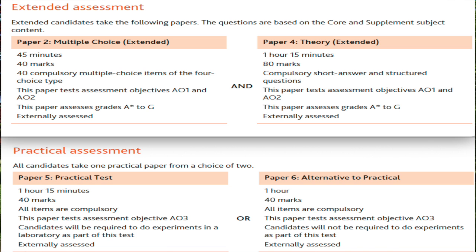Going back to paper two in IGCSE: it's multiple choice and related to Extended. The time allowed is 45 minutes and the total mark is 40 marks. For paper four, which has theory questions, the time is one hour and 15 minutes — around 75 minutes — and the total mark is 80 marks. Remember, on average one minute equals one mark.